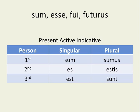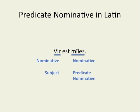A predicate nominative is only used in a sentence that has a form of the verb sum/esse, meaning 'to be.' For example, in the sentence 'vir est miles,' vir is in the nominative because it is the subject and miles is the predicate nominative. The predicate nominative provides some more information about the subject. Here, we learn that the vir is a miles, or the man is a soldier.